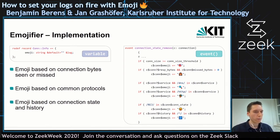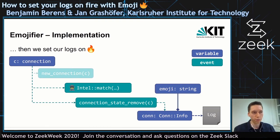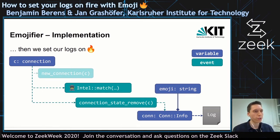The next step is setting the log actually on fire. We had put a couple of emojis already, but we hadn't put fire to the logs. For that, we wanted to deal with intelligence matches. An intelligence match cannot be used from just the connection field and the connection state remove event, because there's another event involved — the intel match event.